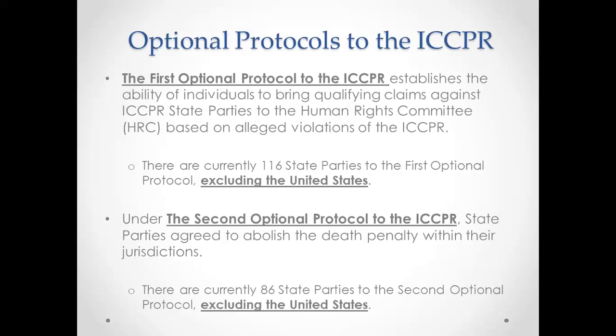As of today, 116 countries have ratified the first optional protocol. Unfortunately, the US has not ratified it, so we cannot bring individual complaints against the US for ICCPR violations before the UN Human Rights Committee. Similarly, the US has not ratified the second optional protocol dealing with abolishing the death penalty. As of today, 86 state parties have adopted that protocol, prohibiting themselves from using the death penalty.